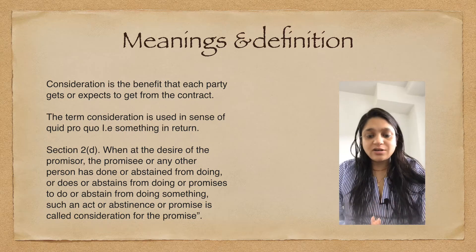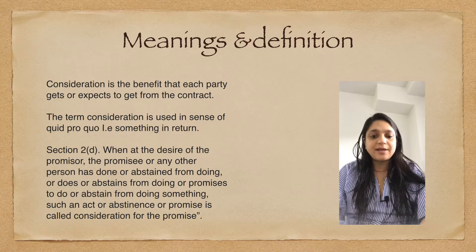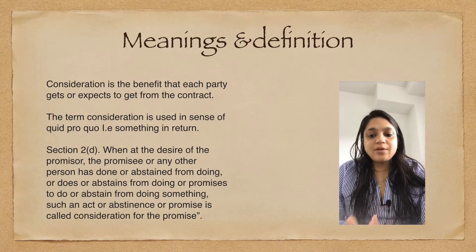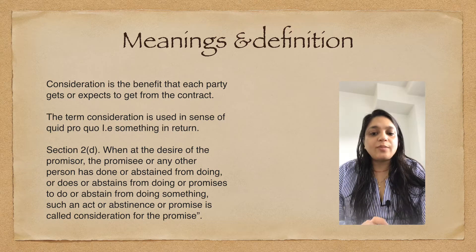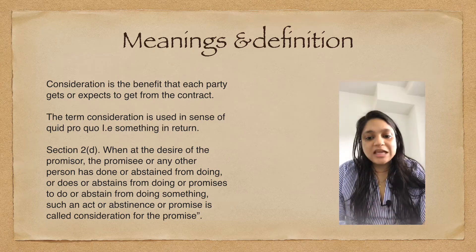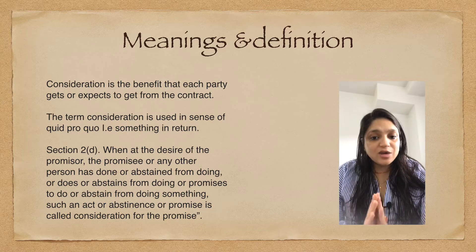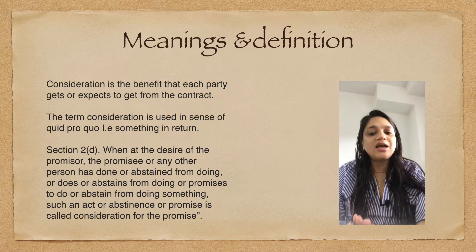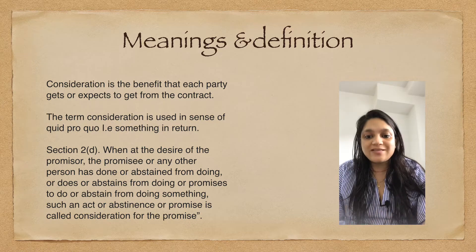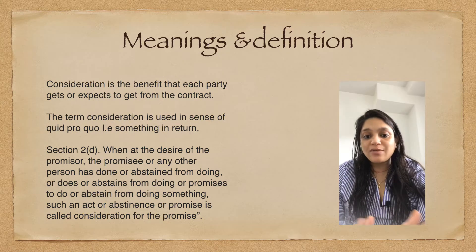Suppose A gives B an offer: 'I want to buy your car for rupees five lakh.' So what is the consideration for B? Rupees five lakh — because if B enters this contract, what does he get as consideration? He gets money, that is rupees five lakh. And what does A get? A gets the car.